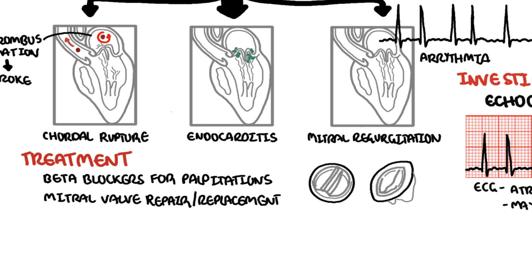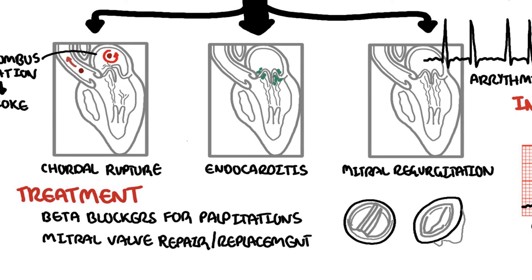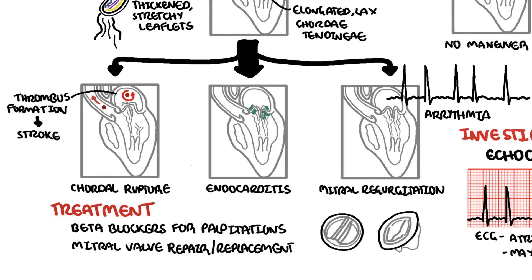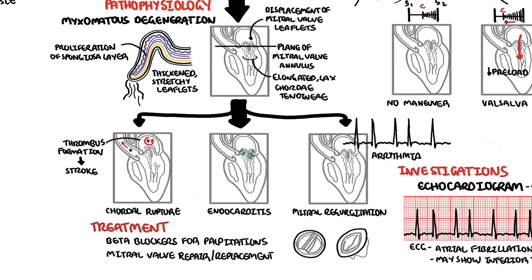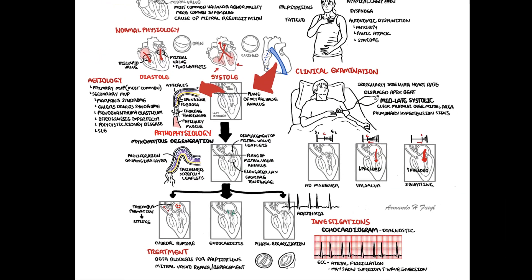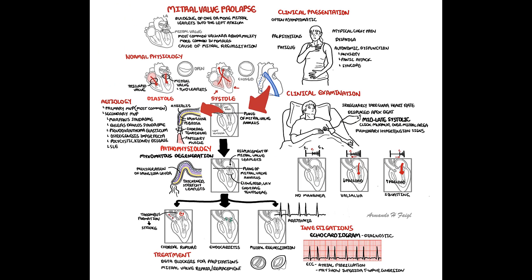In summary, mitral valve prolapse is when one or both leaflets prolapse into the left atria during systole. It's often asymptomatic; however, one can develop chest pain, palpitations, and anxiety-like symptoms, in which case beta blockers can be offered. The classic murmur is a mid-to-late systolic murmur with an associated click.